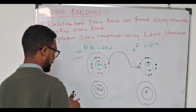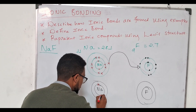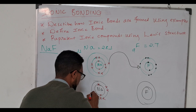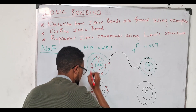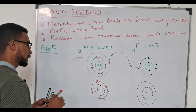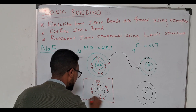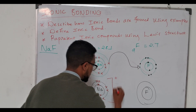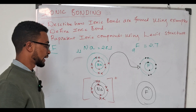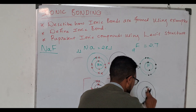Sodium had two electrons in the first shell and eight electrons in the second shell. Now, as you can see, sodium has lost one electron. We represent that by assigning a positive charge because it has lost one electron.